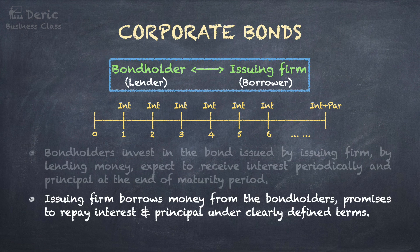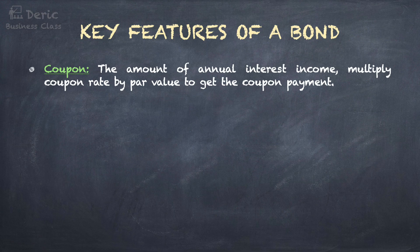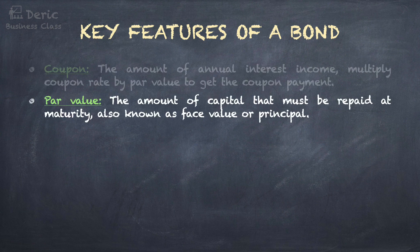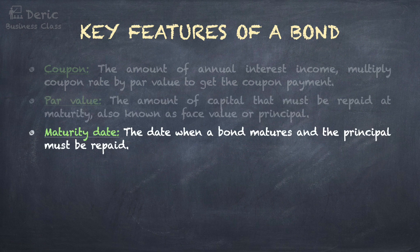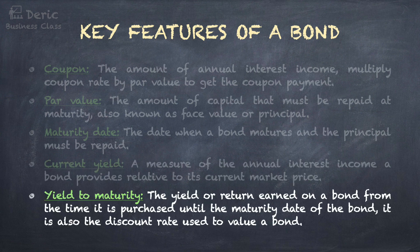For the issuing firm that borrows money from the bondholders, it promises to repay interest and principal under clearly defined terms, such as when to pay and how much to pay. Key features of a bond include: Coupon — the amount of annual interest income, calculated by multiplying the coupon rate by par value. Par value — the amount of capital that must be repaid at maturity, also known as face value or principal. Maturity date — when the bond matures and principal must be repaid. Current yield — a measure of the annual interest income a bond provides relative to its current market price. Yield to maturity (YTM) — the yield earned on a bond from the time it is purchased until the maturity date; it is also the discount rate used to value a bond.